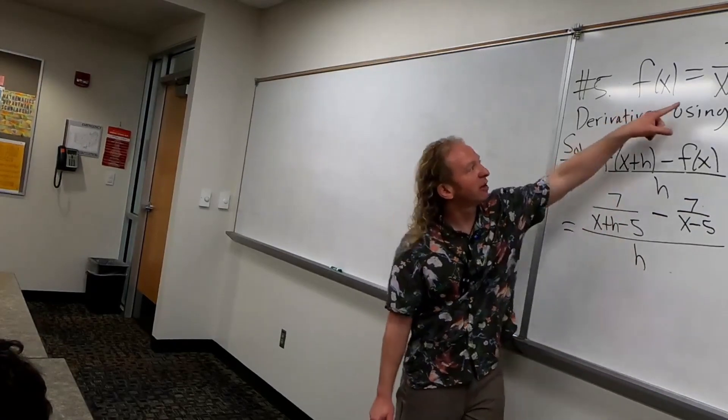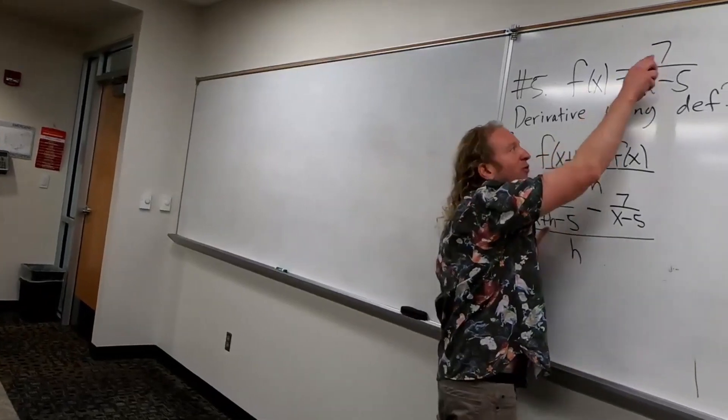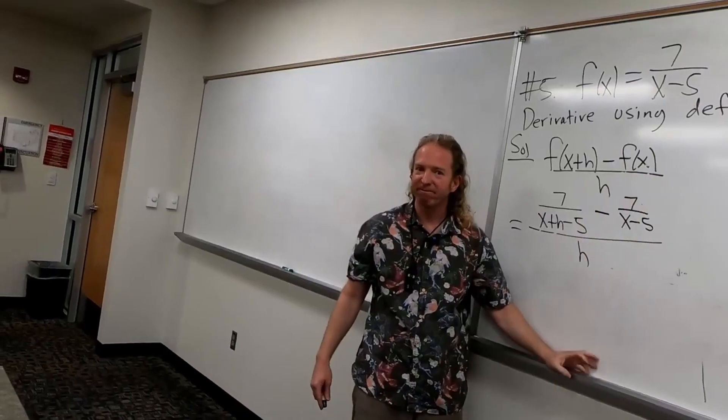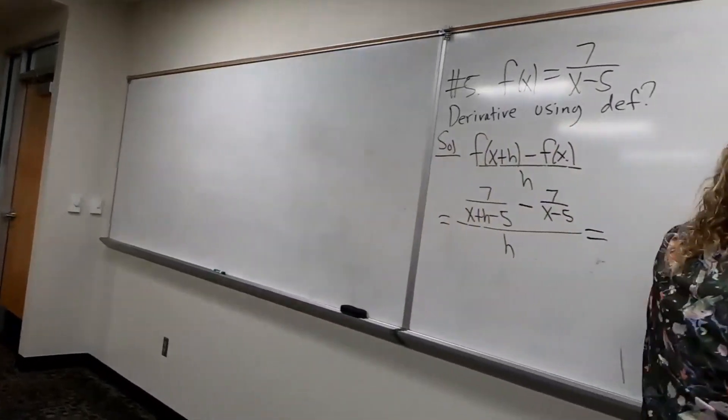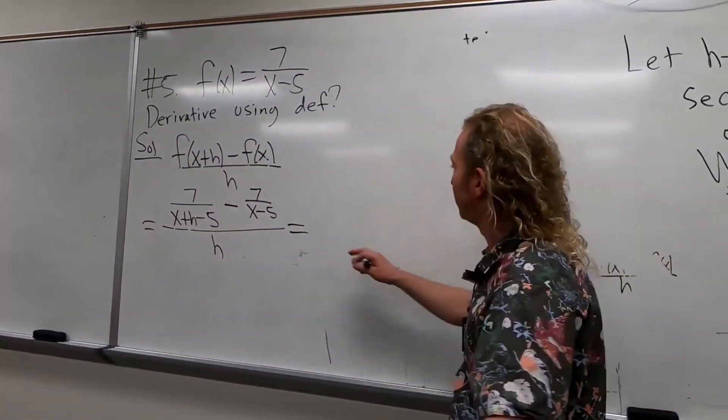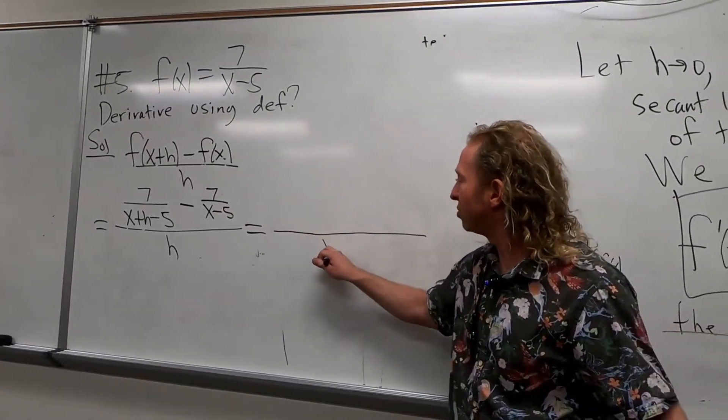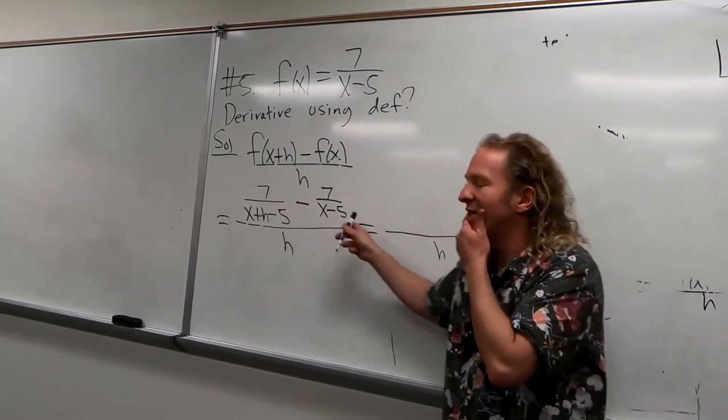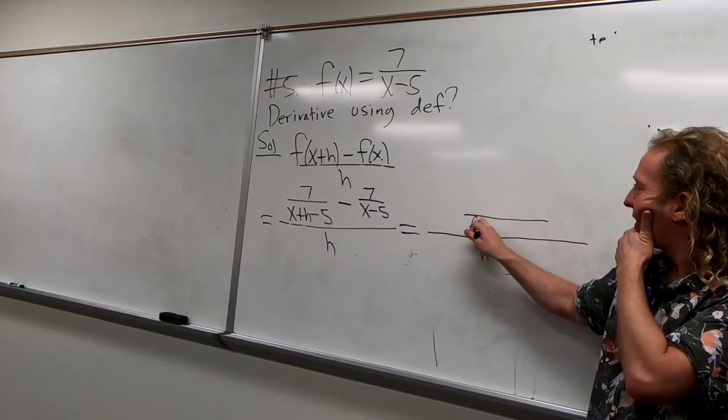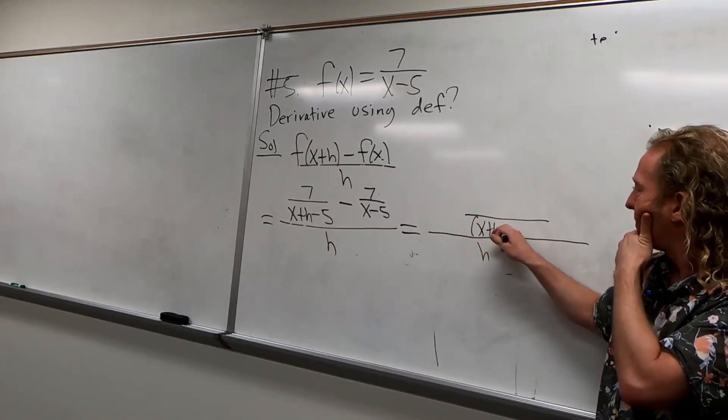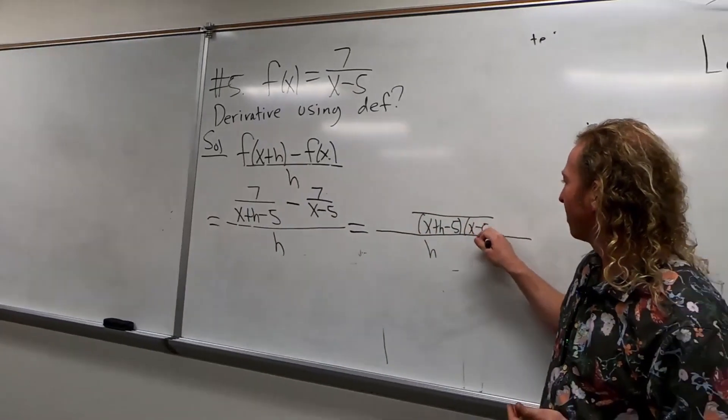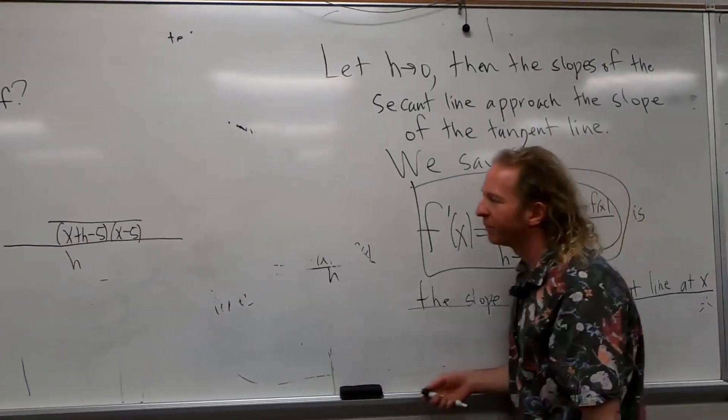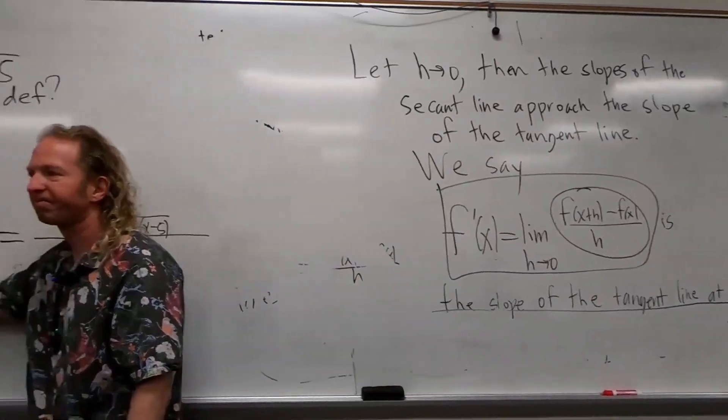So, first you replace all the x's with x plus h. So, seven over x plus h minus five. Then you just replace f(x) with that. Okay, so now, the way I do this next step is a little bit weird, maybe. So, we have the division sign, and we have the h. And then, I just write down the LCD. I know it's going to be this times this. So, I just know it's going to be x plus h minus five times x minus five. So, I do that first.